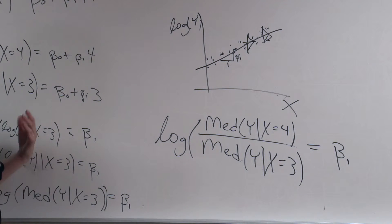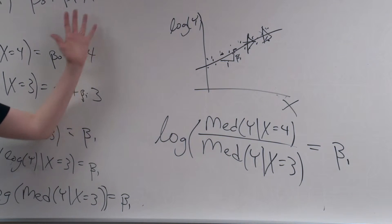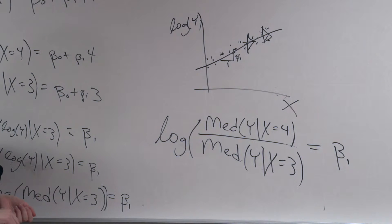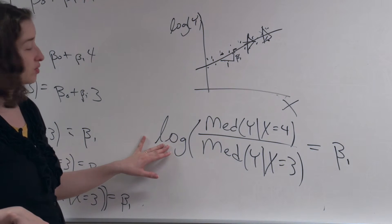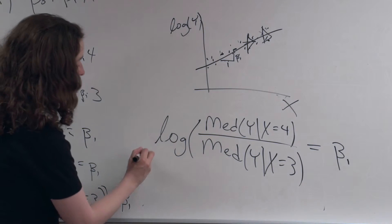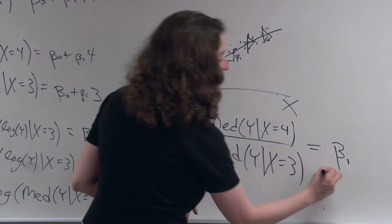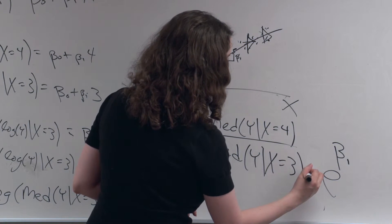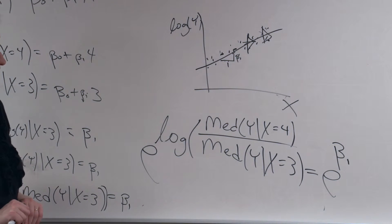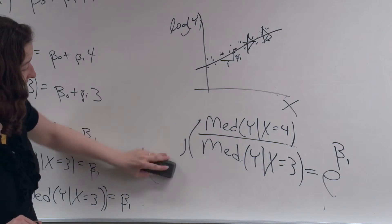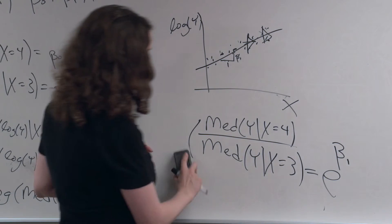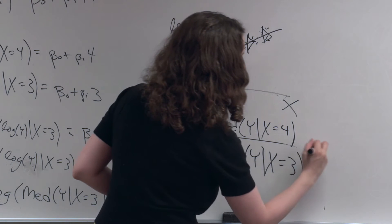Remember that in statistics the convention is to take log base e — just that number, 2.7. You could use base 10 and this would all work out the same way, but the convention is to use log base e. In software like R, when you use the function log, the default is log base e — it's important to remember. So to get rid of this log, if I take e raised to the power of everything on one side, and e raised to the power of everything on the other side, these two expressions will still be equal to each other. The e cancels out the log.